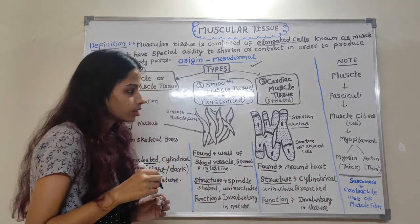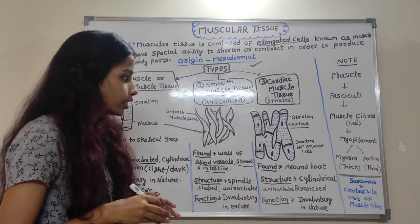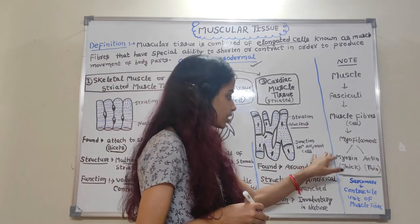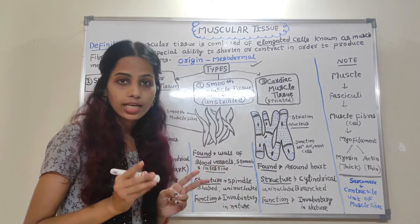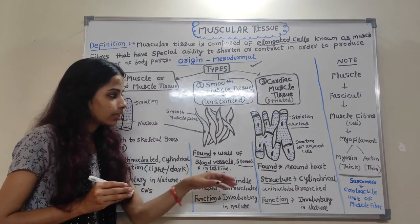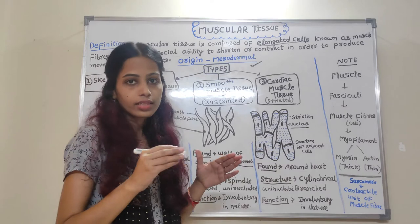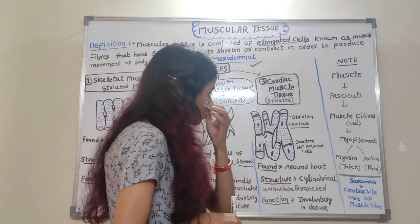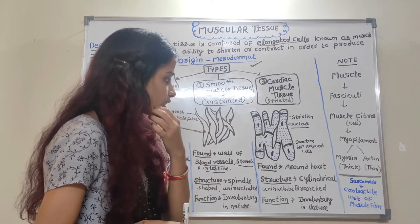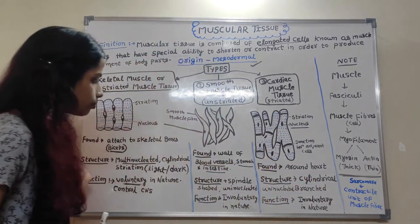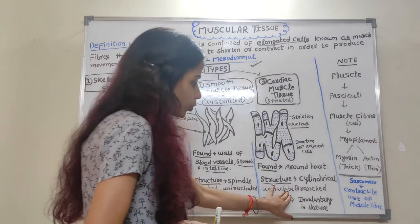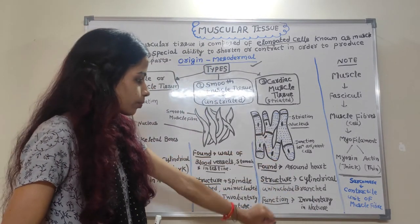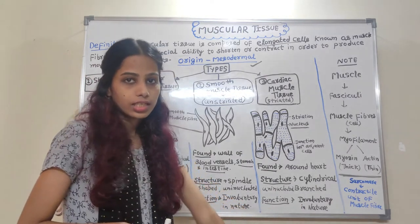One extra feature of cardiac muscle is the junction between adjacent cells. When two cells are present, there is a junction that provides interaction between the two cells. The structure is cylindrical like skeletal muscle, uninucleated, and branched. The function of cardiac muscle is involuntary in nature.